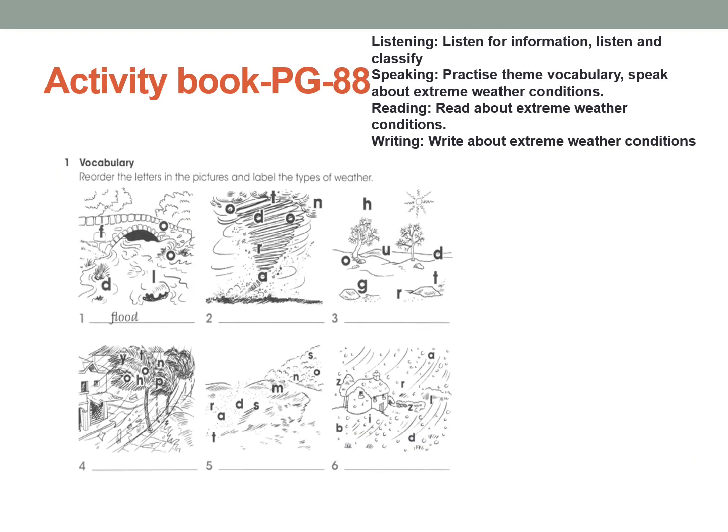Now please get your activity book page number 88. Vocabulary: reorder the letters in the pictures and label the types of weather. The words are given but you have to write them in the correct order. The first picture is already given — flood. For the second picture, what do you think it is? Is it tornado, blizzard, sandstorm? Write down the correct word formed from the correct letters. Once you finish, check your answers in the next slide.